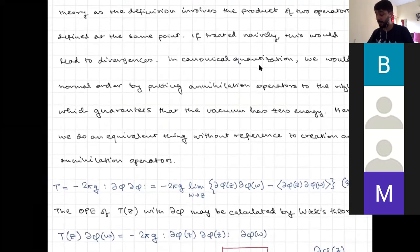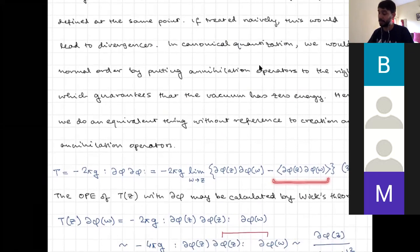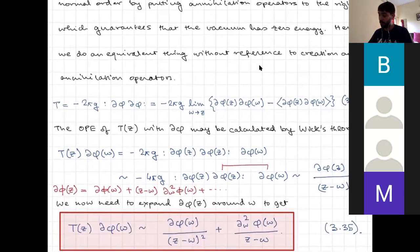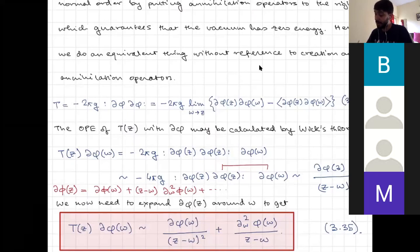We then wrote down the energy-momentum tensor for the free boson, with expressions for T(z) and T̄(z̄). Since these are defined at the same point, we introduced normal ordering to ensure things don't blow up — that's what the double-dot notation means. We wanted to find the OPE of T with ∂φ, to verify that ∂φ is a primary field, using Wick's theorem.